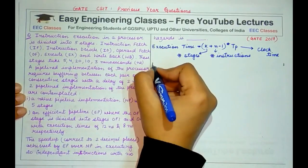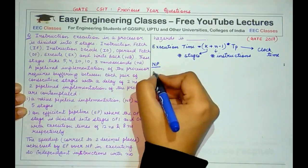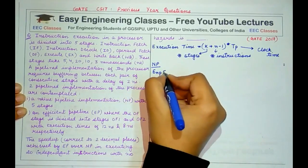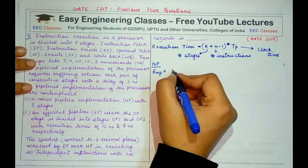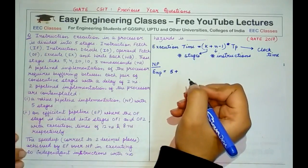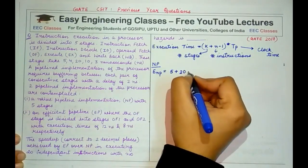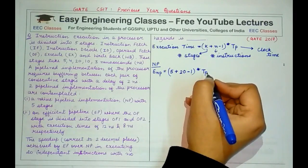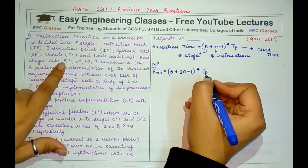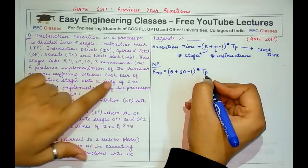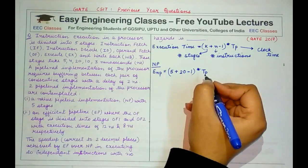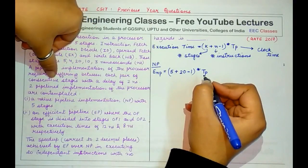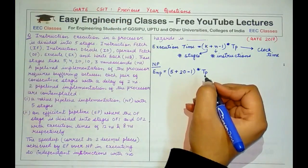For the naive pipeline (NP), K is 5, N is 20. TP is calculated as the maximum of (stage delay + buffer delay) across all stages. Stage delays are the time taken by each stage, and buffer delay is the 2 nanoseconds between consecutive stages. So we add 2 to each stage's delay.